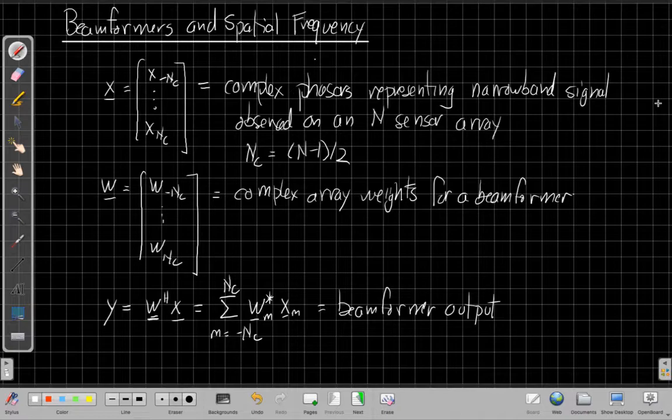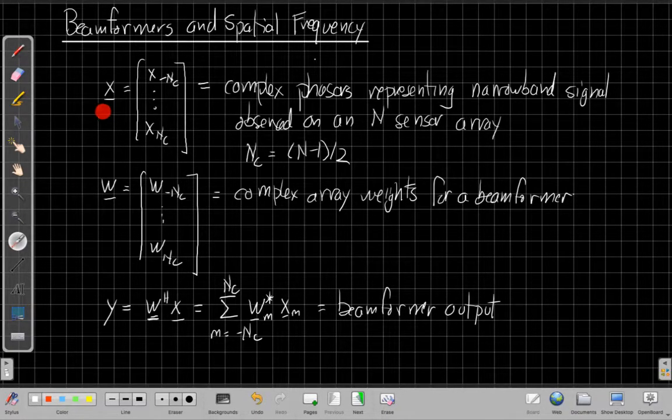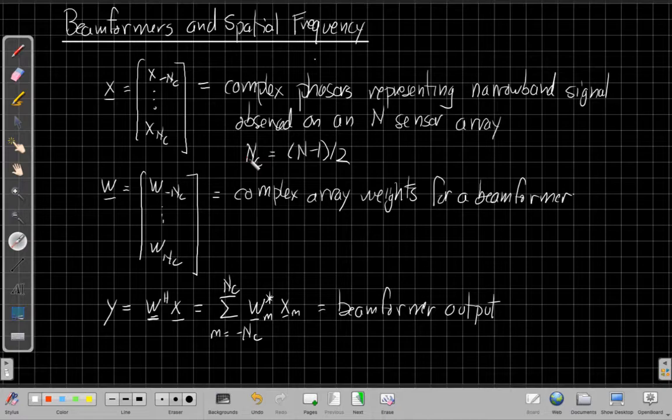So if we have a beamformer, we're going to think about the case where we have a vector x is going to be our input vector. This is a vector of complex numbers representing the complex phases representing a narrow band signal observed at an N sensor array. And we're going to index that array as we have often going from minus nc to plus nc. So assuming we have an odd number of sensors and N minus 1 over 2 is nc, those tell me the limits when I think about the sensors being symmetric around the origin. We can represent a narrow band signal observed at a sensor by a single complex number or complex phaser.